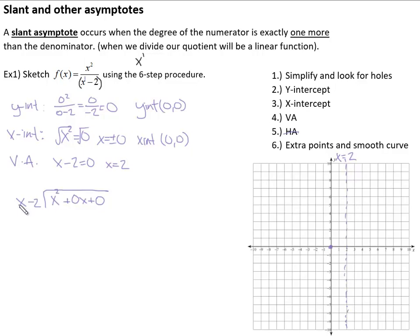So if we do our work, x squared divided by x is x. Distribute our x, we get x squared minus 2x. We subtract that whole quantity by adding the opposites. Those cancel out, I get positive 2x plus 0. Next I would do 2x divided by x, which is 2, so positive 2. Distributing, 2 times x is 2x, 2 times negative 2 is negative 4. We subtract this quantity by adding the opposites. Those cancel, and I end up with a remainder of 4.